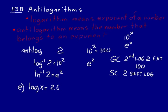Look at practice problem E: log of x equals 2.6. To find x, we think of it as x equals the inverse log — written as log to the minus 1 — of 2.6. Logarithm of x equals the exponent for a base of 10, so x equals 10 to the 2.6. On a graphing calculator, hit second, LOG, 2.6, and that equals about 398.11.